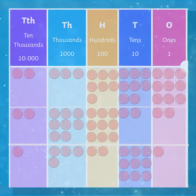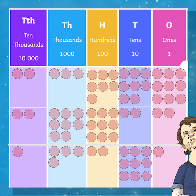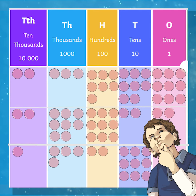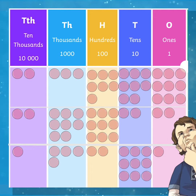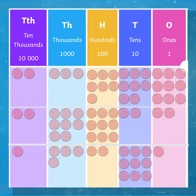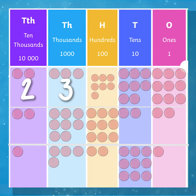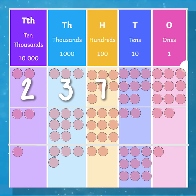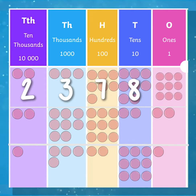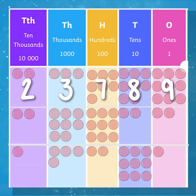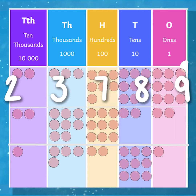Here are three numbers on a place value chart. Our first number has two counts in the ten thousands column, three counts in the thousands column, seven in the hundreds column, eight in the tens, and nine counts in the ones. This means our first number is 23,789.